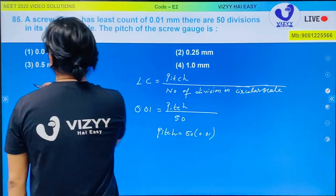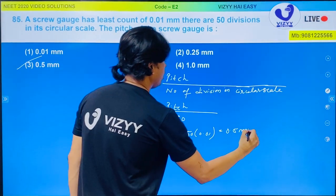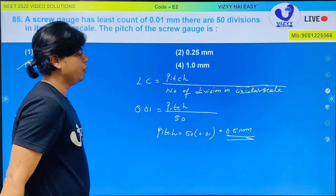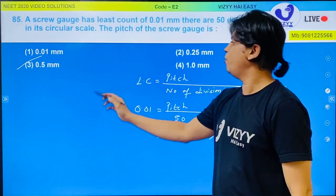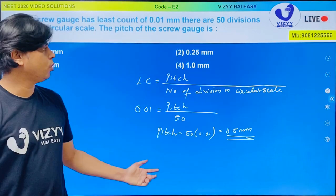Which is option number 3 in this case which is 0.5 mm. So answer comes out to be 0.5 mm which is option number 3. Very simple question, just least count.